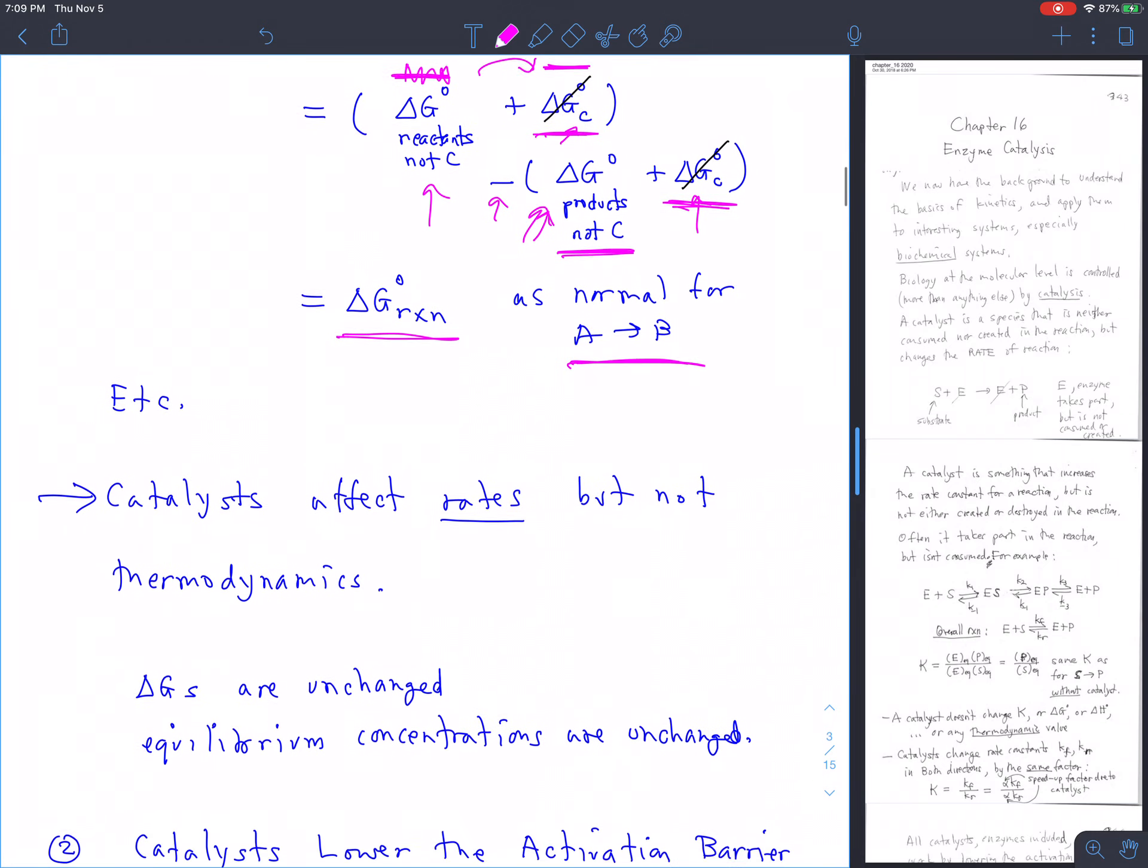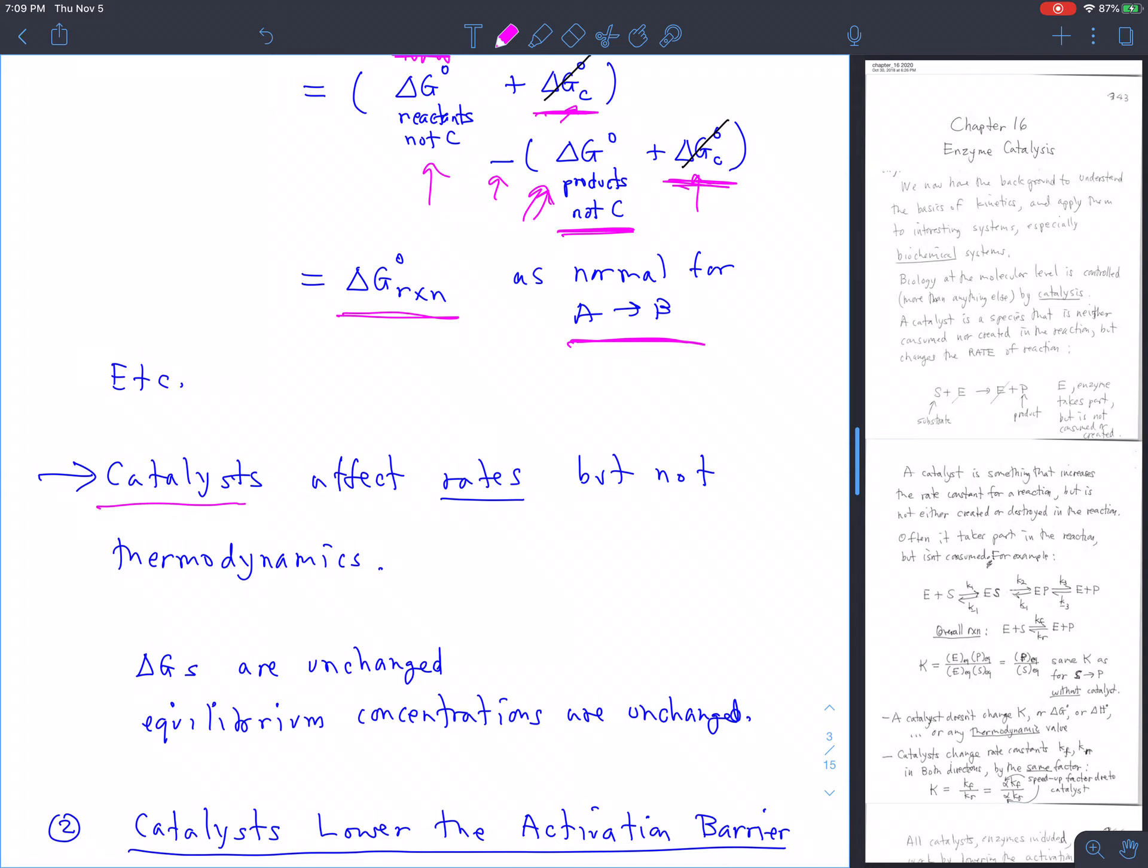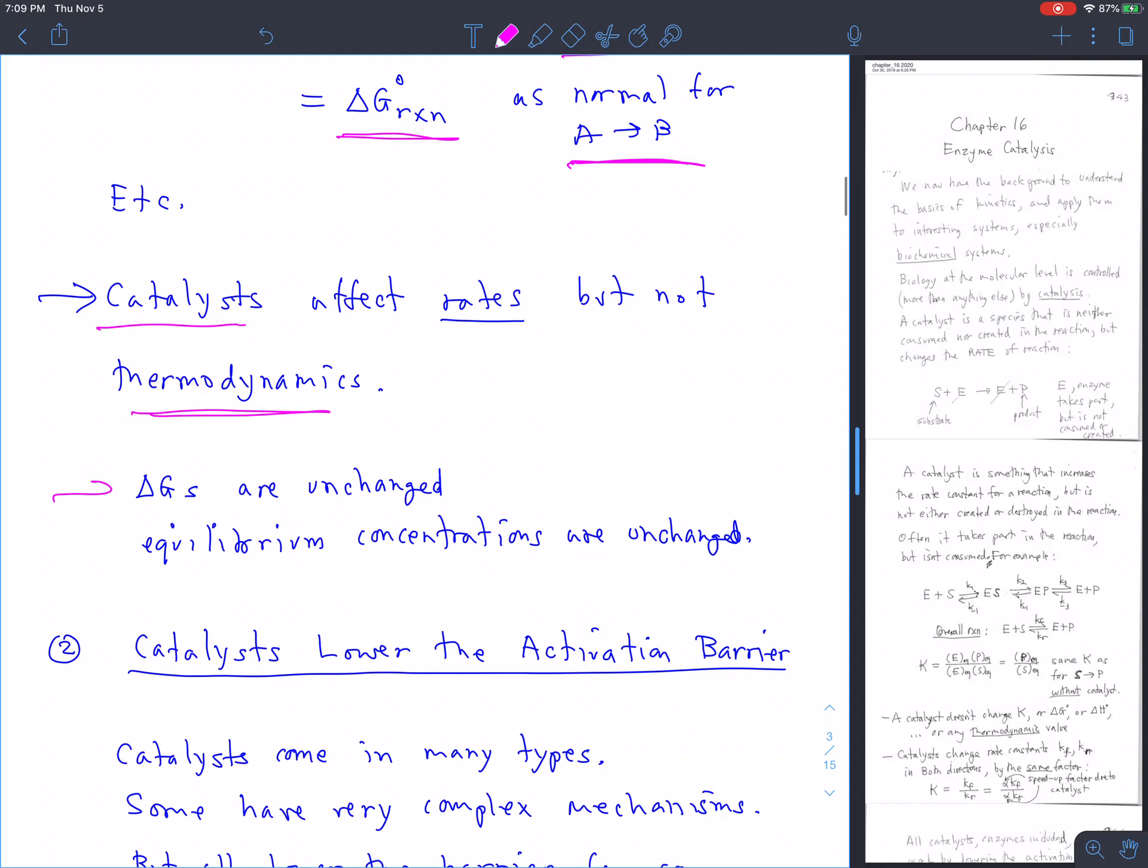And so in the end you get delta G of reaction without the C in there. The bottom line is the catalysts affect rates, but they don't affect the thermodynamics at all. The delta G's are unchanged, the equilibrium constants are unchanged, and that means that at equilibrium all the equilibrium concentrations are unchanged. The reaction goes to equilibrium exactly as it would without the catalyst, it just goes there faster. That's the only effect of a catalyst.